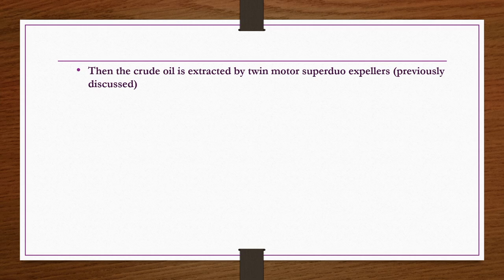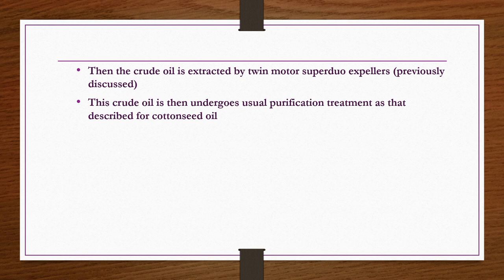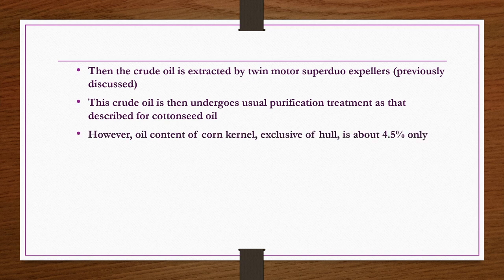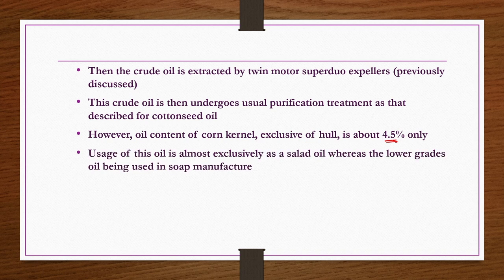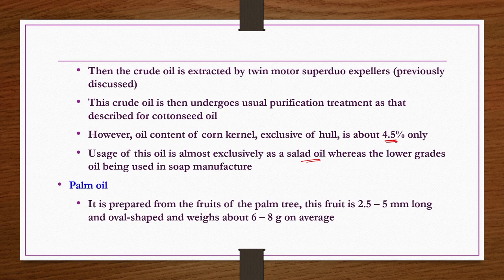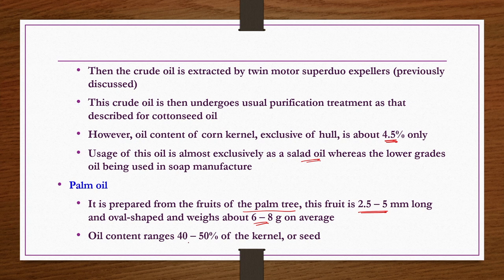The crude corn oil is extracted by twin motor superdough expellers as explained earlier, then undergoes the usual purification treatment as described for cotton seed oil. The oil content of corn germ is about 40 to 50 percent of the kernel or seed, averaging 6 to 8 grams. In palm oil, oil is obtained from both the fruit and from the kernel or seed in two separate processes.